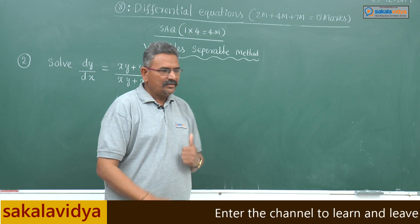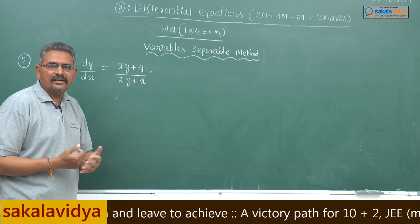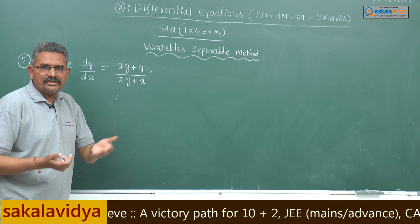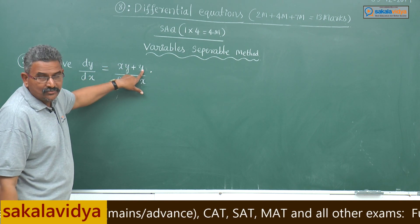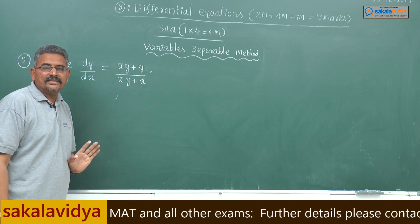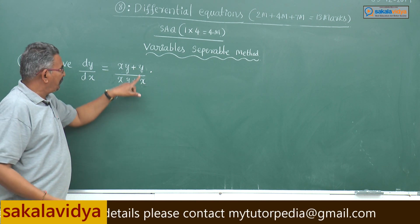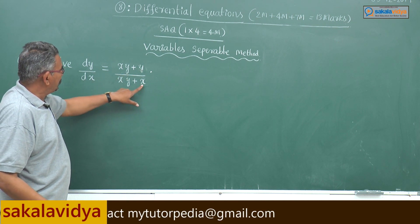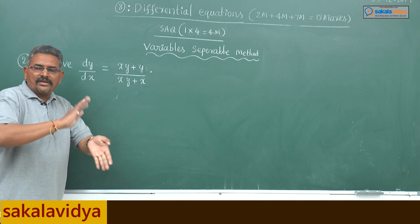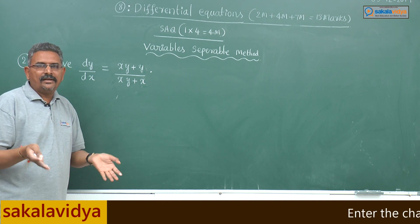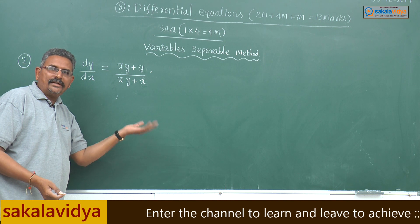One might be tempted to say that it belongs to the homogeneous method. But observe: xy has degree 2, y has degree 1, so it is not homogeneous. It should be variable separable only, because y can be taken common here and x can be taken common out there, so that we can separate functions of x and functions of y under dx and dy, and then integrate to get the solution.